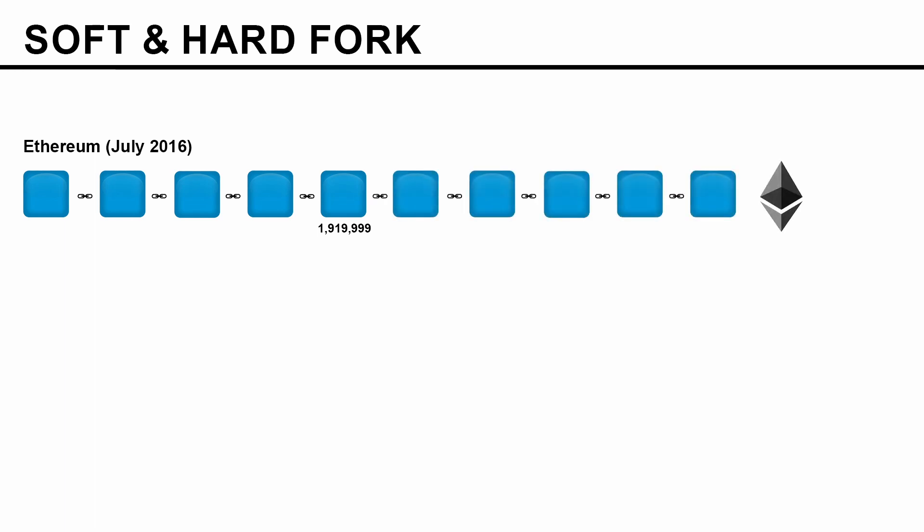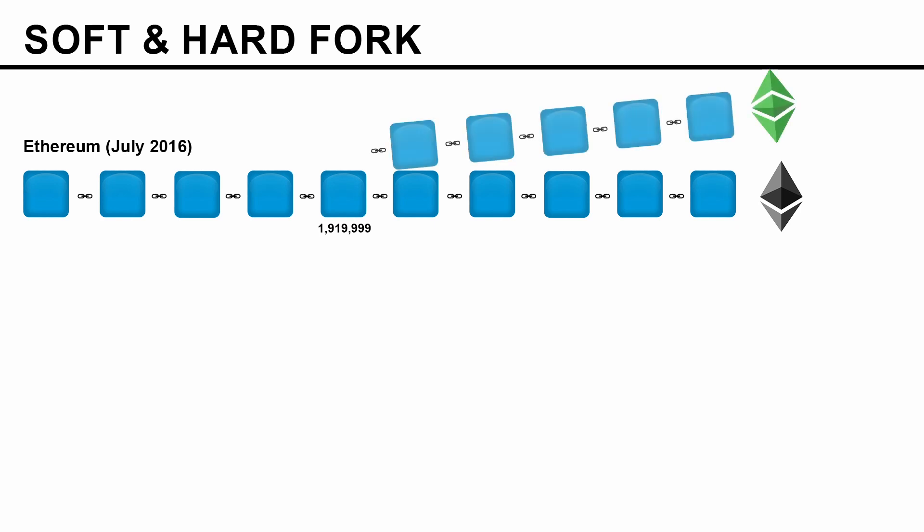The Ethereum chain continues and they reversed the funds, returning them back to the owners. At the same time, there were people who were unsatisfied with this decision, so they decided not to upgrade to the new hard fork. A hard fork is basically a new software upgrade to the blockchain which allows certain things that were not previously allowed. This group of people continued mining and split into their own version.